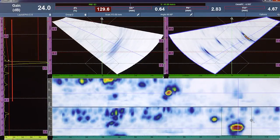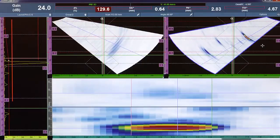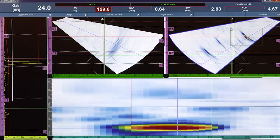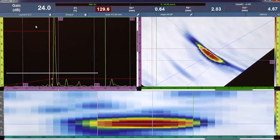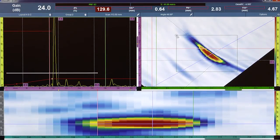When a flaw is detected, length sizing is performed with the cursor on the C-scan using an amplitude drop technique and the statistics displayed in the readings from the scan axes. Depth and height sizing is performed with cursors on the S-scan using amplitude drop or tip diffraction techniques with statistics available from the UT axes.